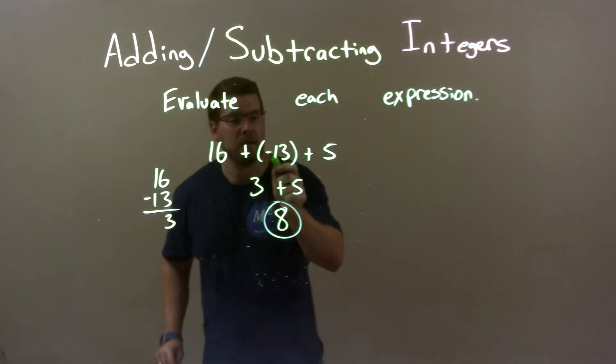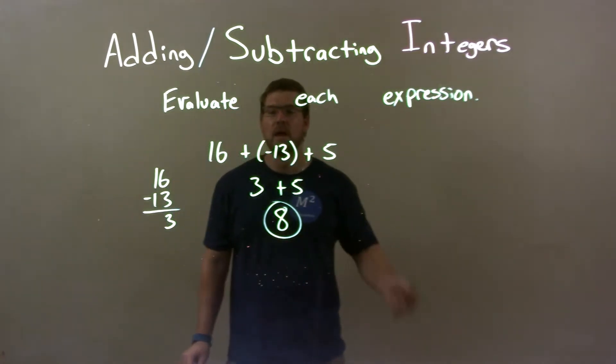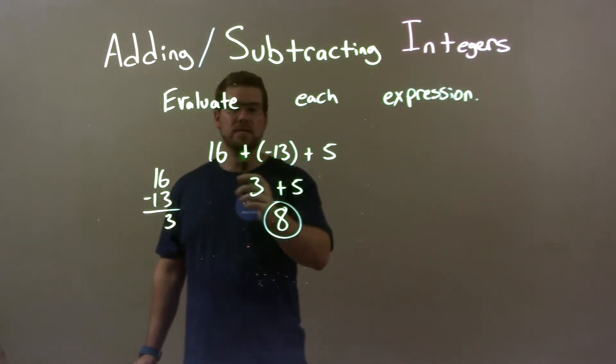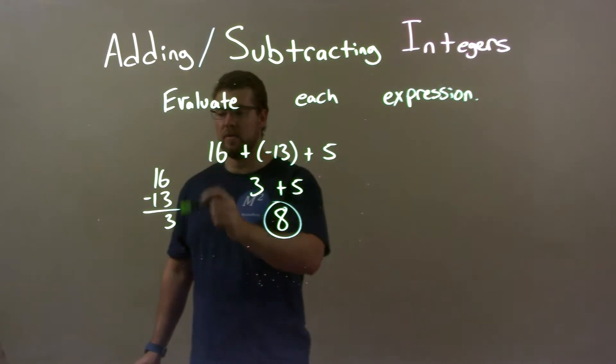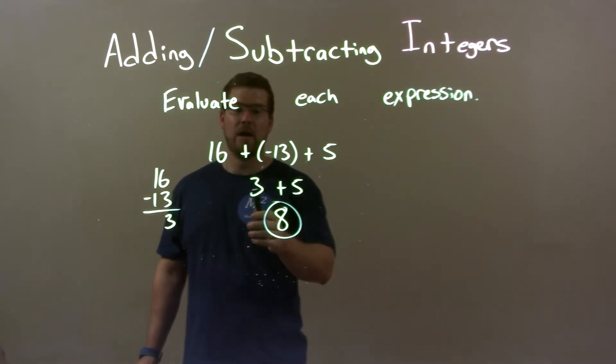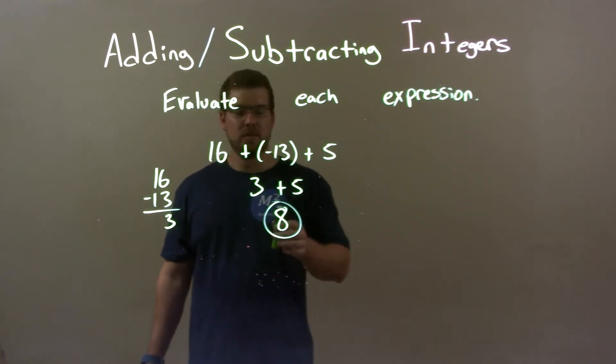Quick recap. We're given 16 plus a negative 13 plus 5. Well, I know 16 plus a negative 13 is 16 minus 13. 16 minus 13 was 3. And then I brought down the 5. Now we have just 3 plus 5. Well, 3 plus 5 is 8. Final answer here is just 8.